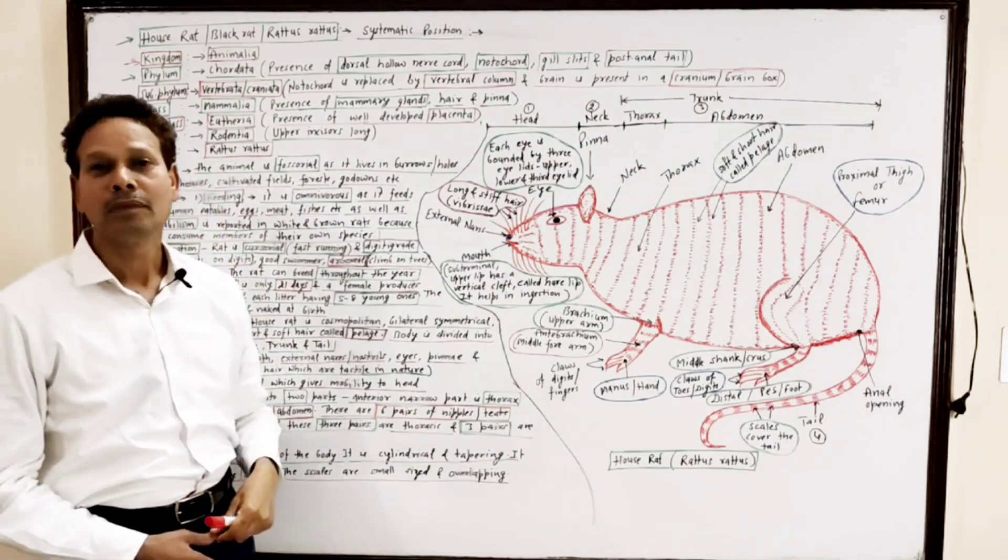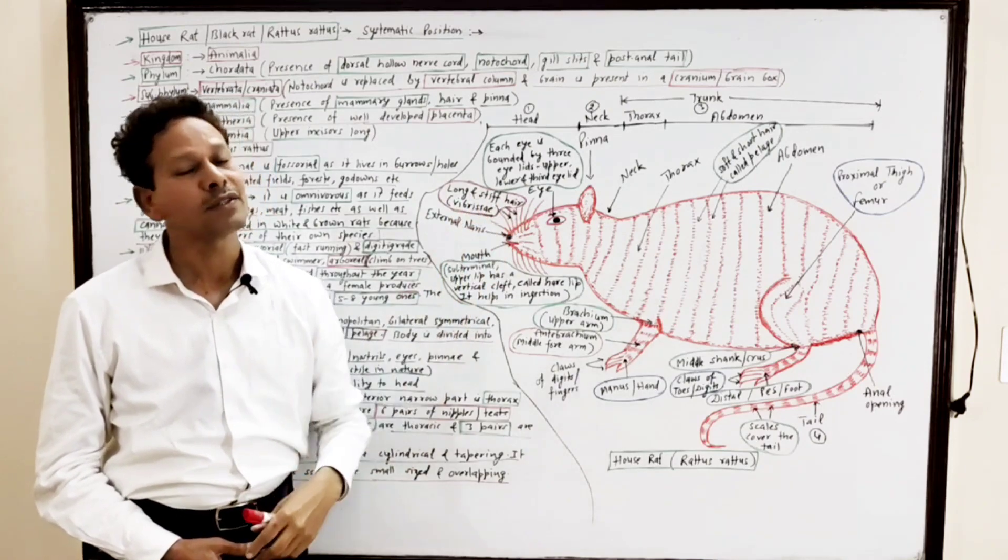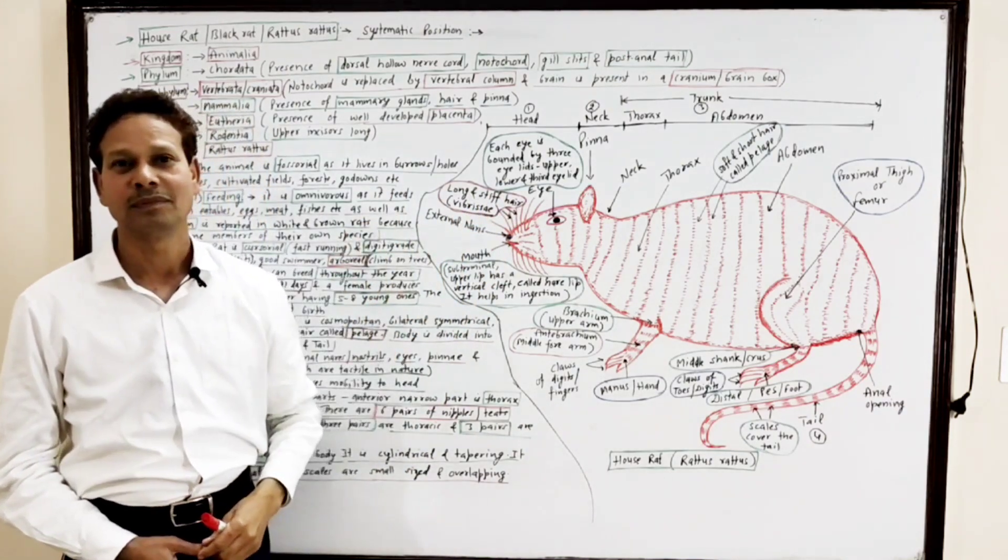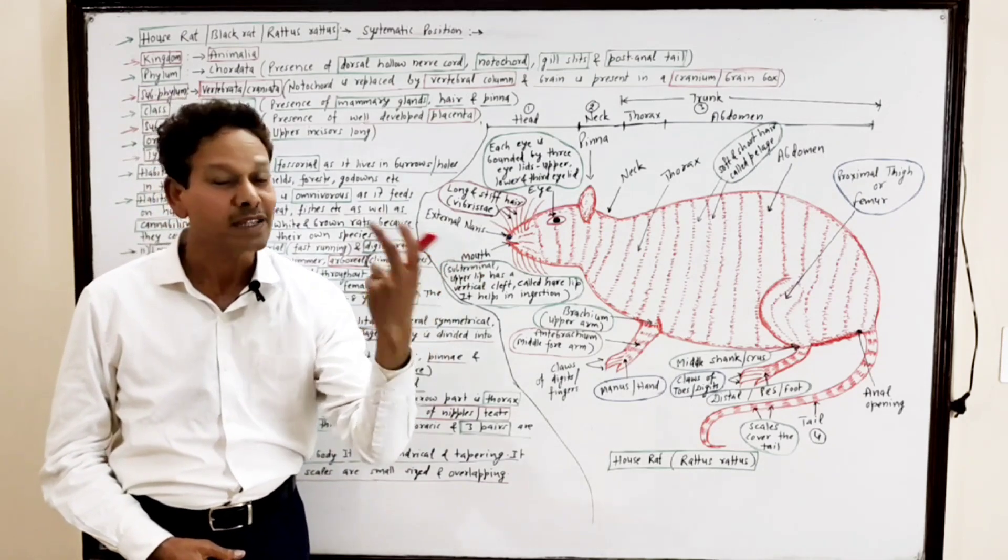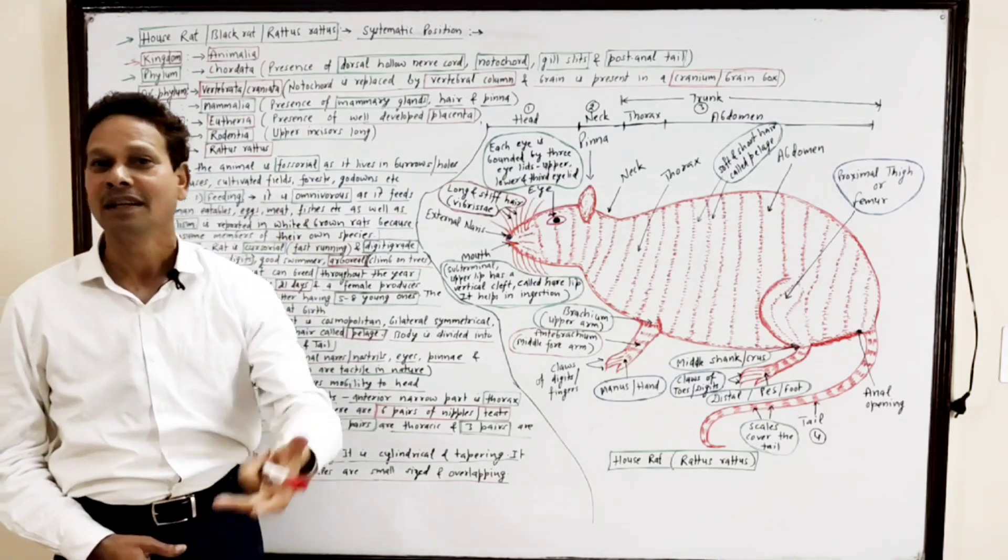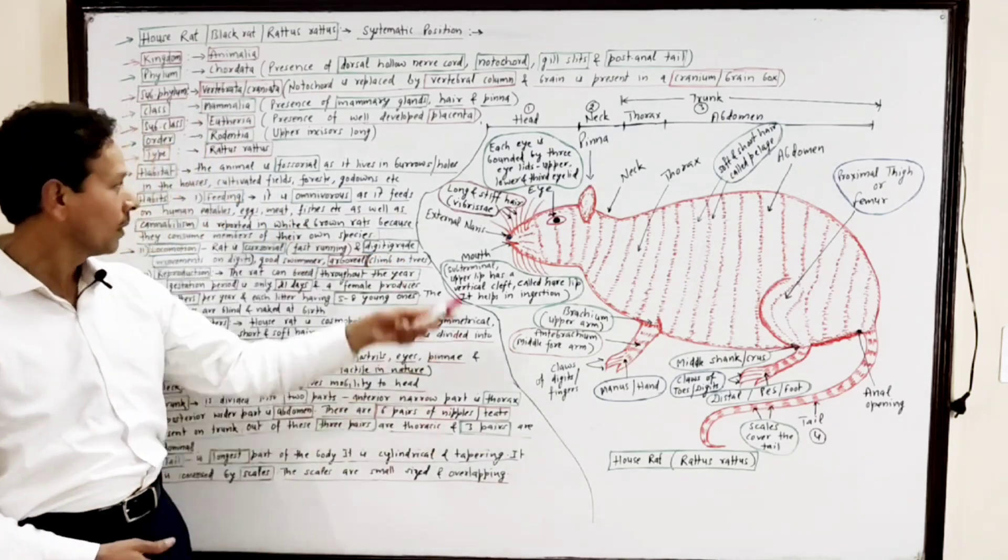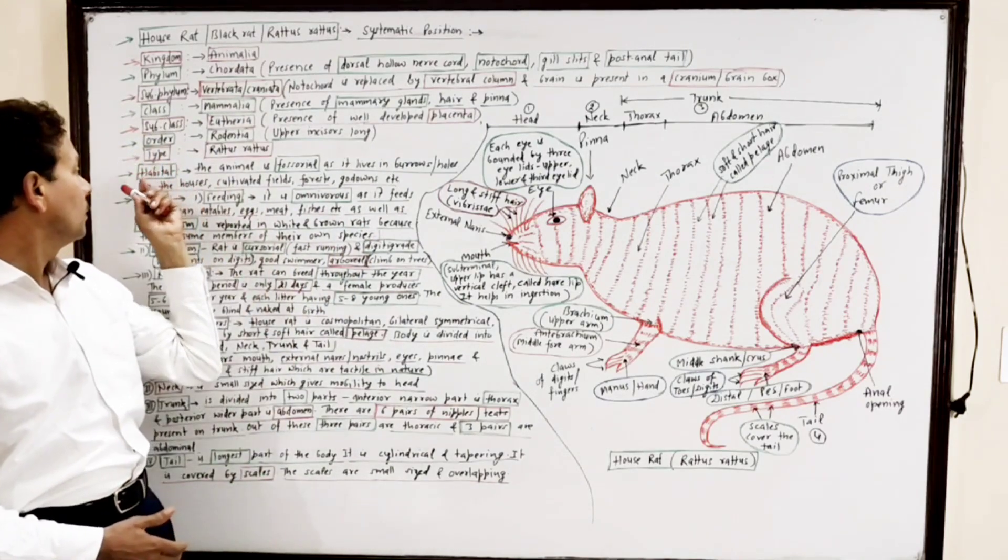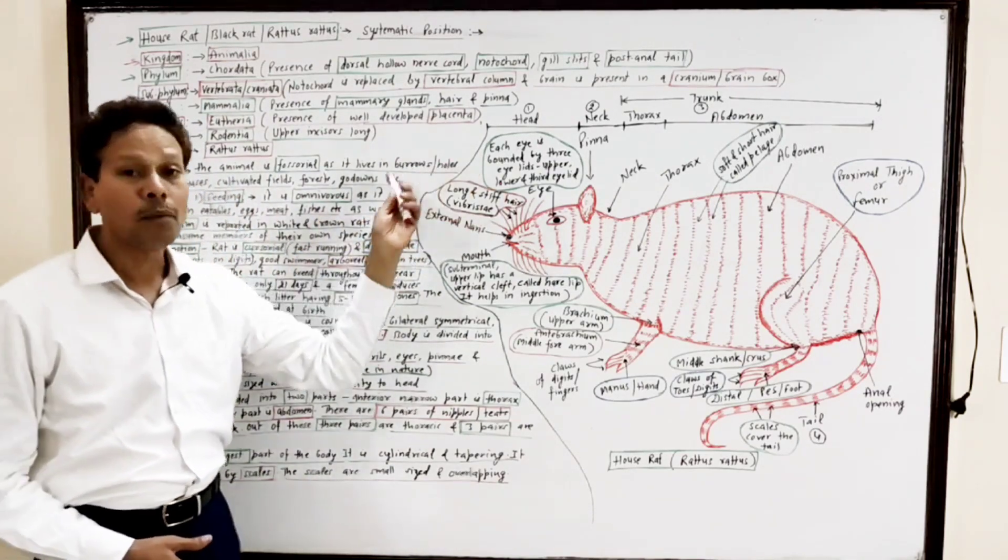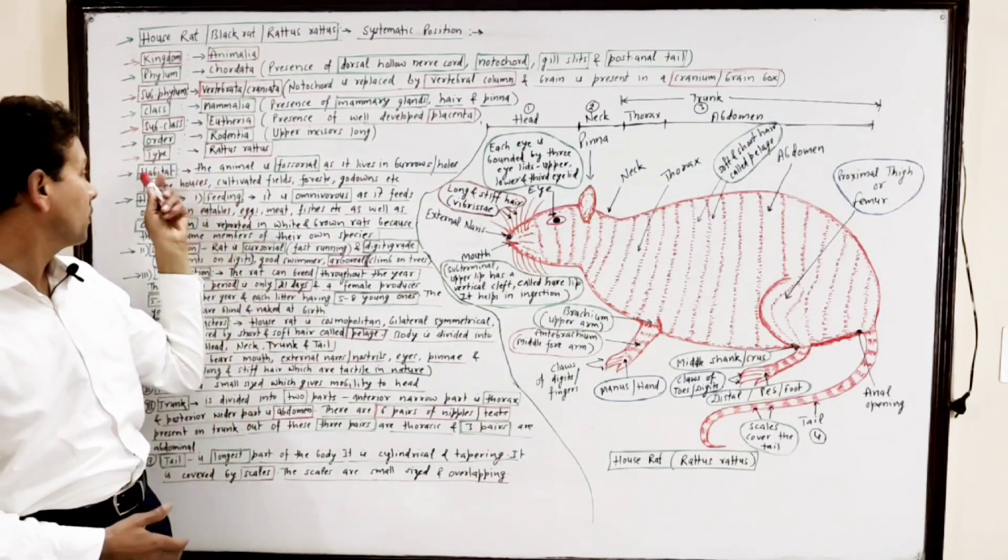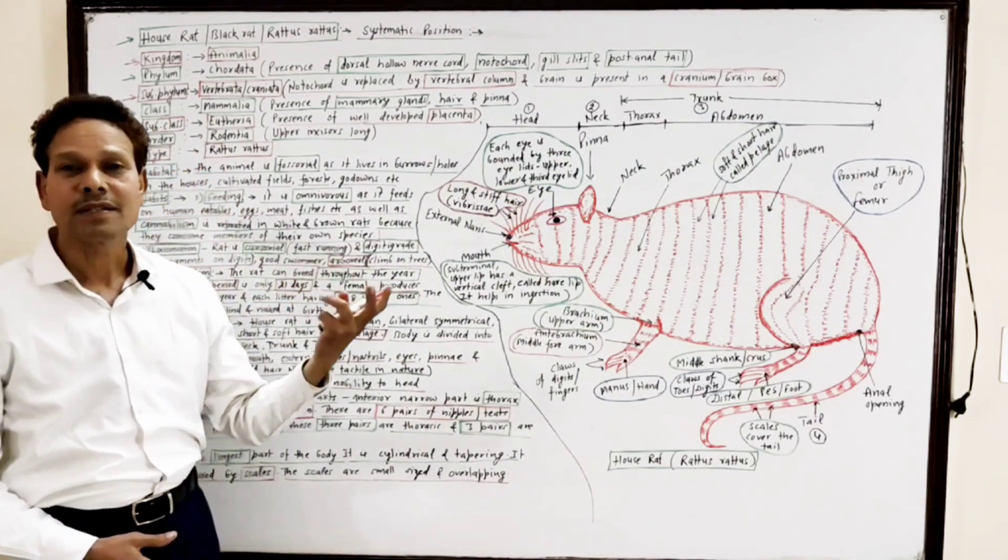Type is Rattus rattus. It means in this lecture, we are discussing house rat, black rat. Scientifically, it is Rattus rattus. Now we will discuss general morphology of rat. First of all, we will discuss habitat.